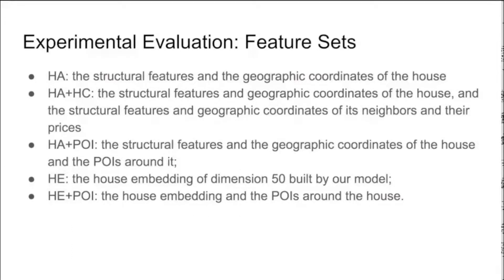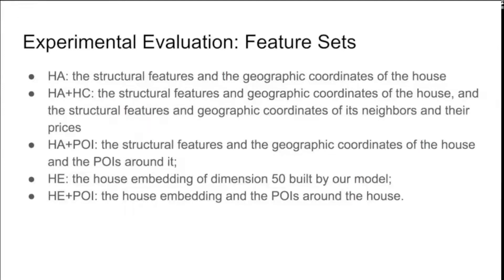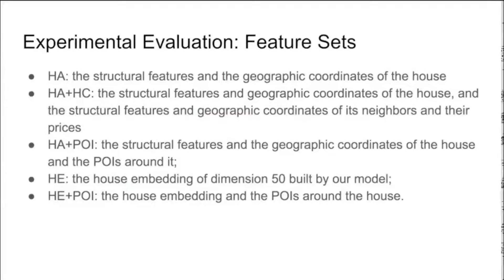These are the feature sets used in our experiments. HA contains the structural features and geographic coordinates of the target house. HA+HC adds the structural features and geographic coordinates of the neighbors. HA+POI adds the points of interest around the house. HE is the house embedding created by our network using a 50-dimensional vector. The last feature set, HE+POI, combines the house embedding with the points of interest around the house.